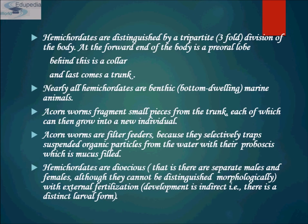An interesting feature of hemichordates is the stomochord, located in the collar — the area just behind the pre-oral lobe, which is the proboscis. The stomochord closely resembles the notochord of Chordata. Another feature resembling Chordata is the presence of two nerve chords: a dorsal nerve chord and a smaller ventral nerve chord.